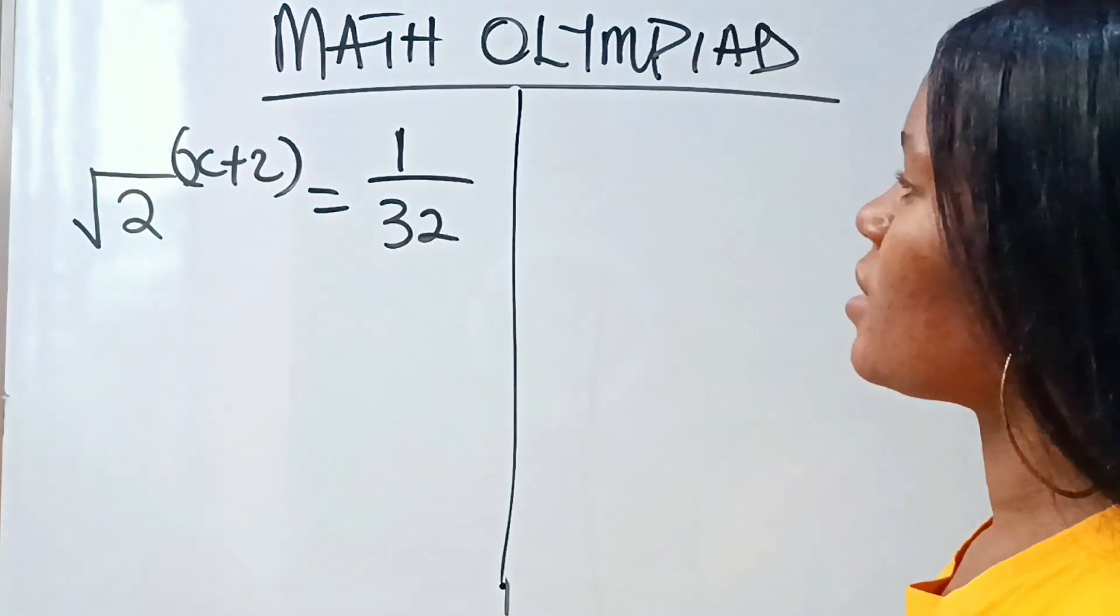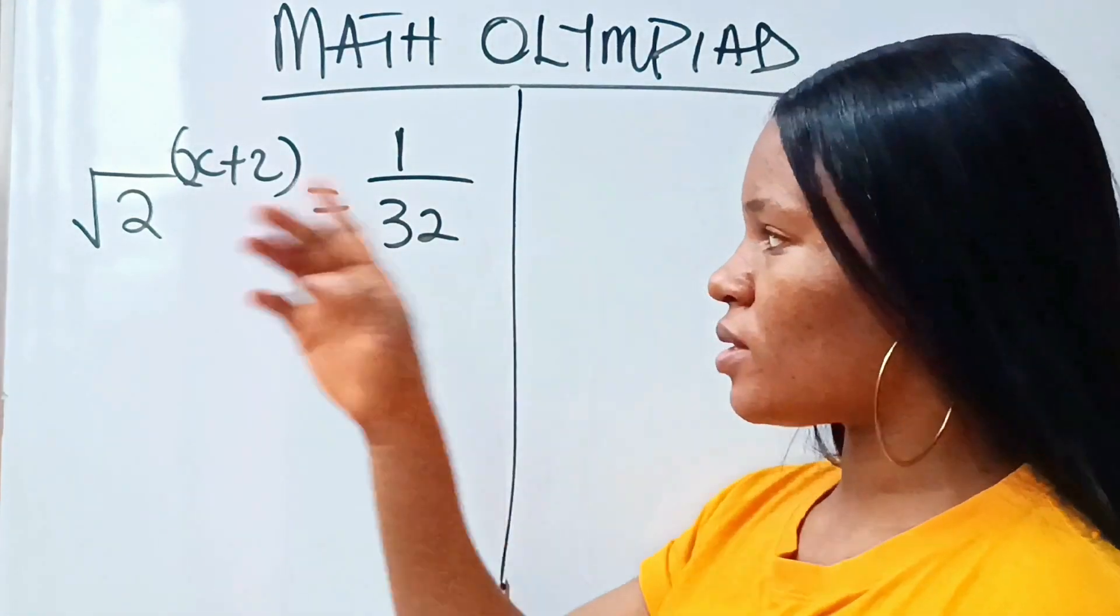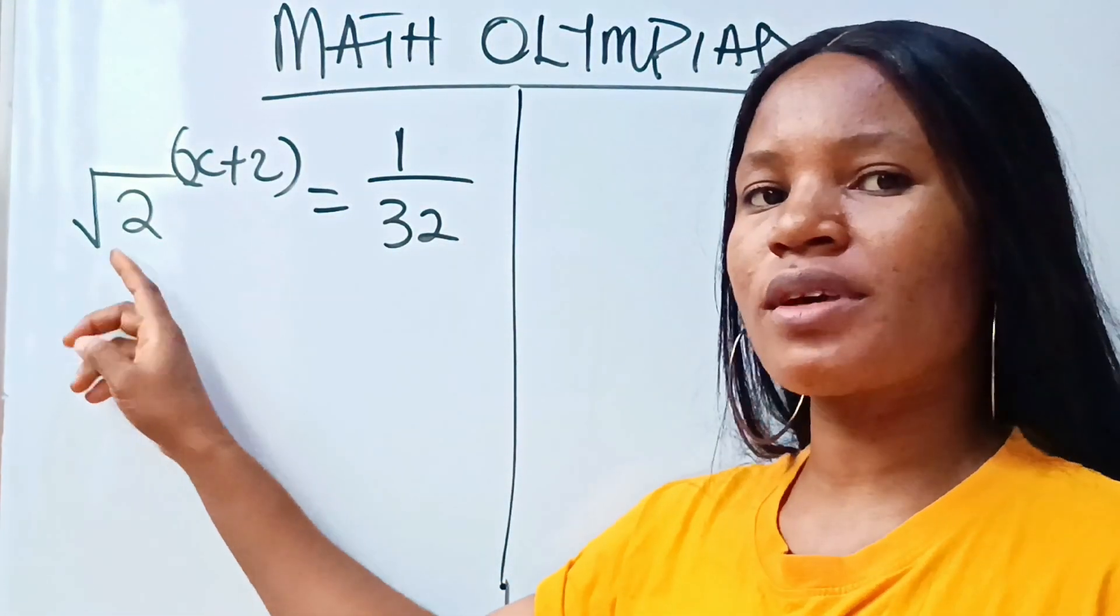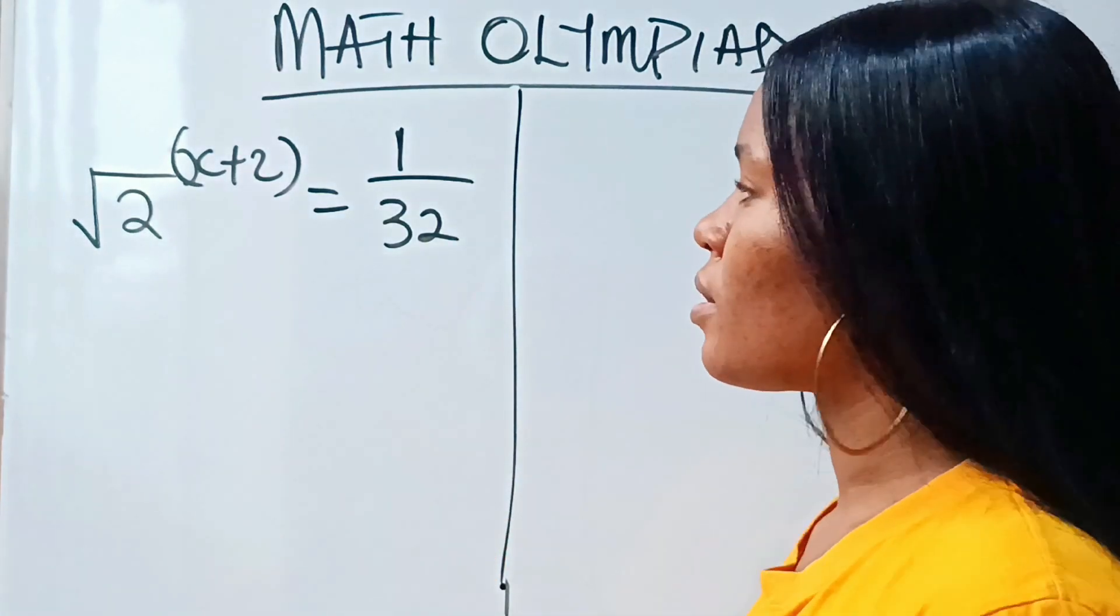Okay, when you have something like this, the first thing we need to do is let's remove this square root. It's actually made the question look ambiguous.